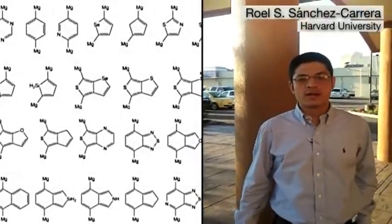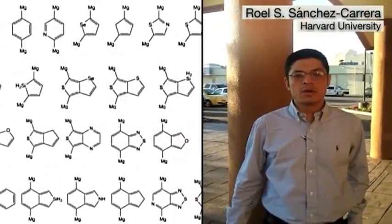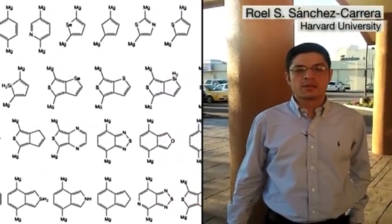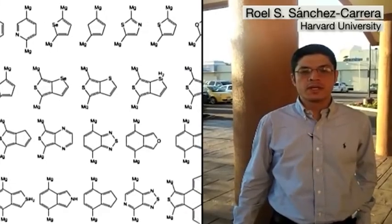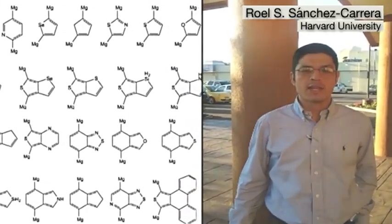In order to start, we needed molecular motifs that could be used in organic photovoltaics. As one of the original team members on the Clean Energy Project, I worked on molecular dynamics calculations to look at how these molecules interact with each other over time within the space of the solar cell.